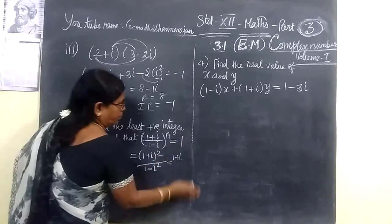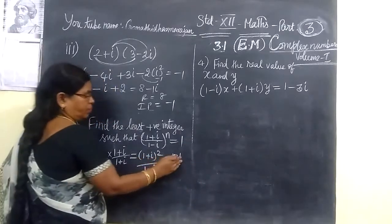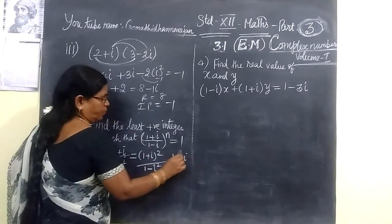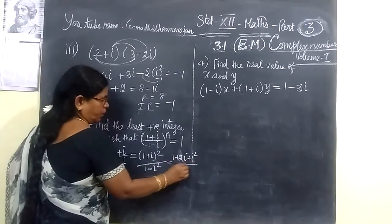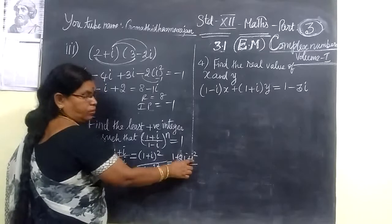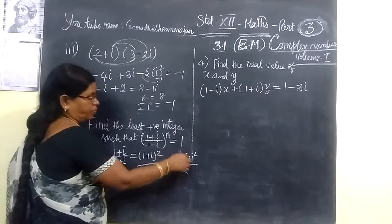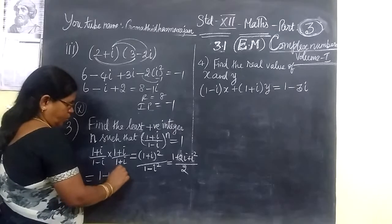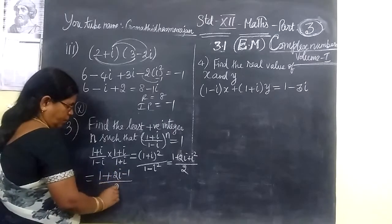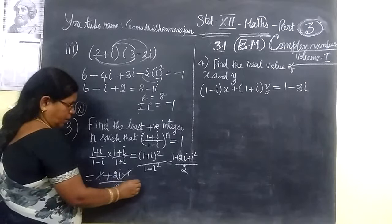And this is an expand. If you expand, 1 + 2i, then plus i squared by 2. So i squared is minus 1. So plus 1 minus 1 cancel it. So 1 + 2i - 1 by 2, we cancel it.